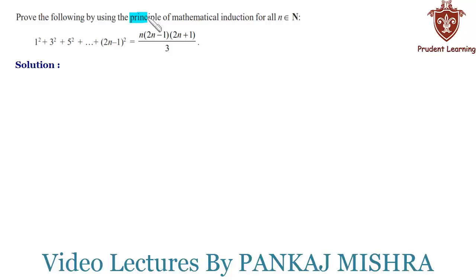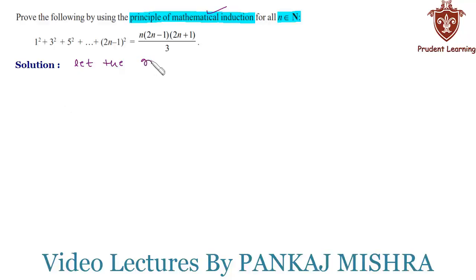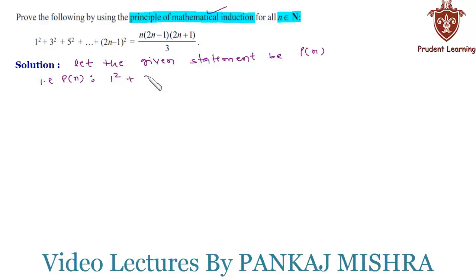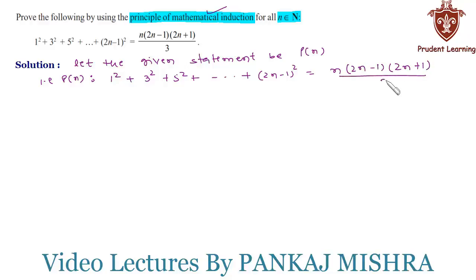Prove the following by using the principle of mathematical induction for all n belonging to the natural numbers. In this question we have an equation which we need to prove by using the principle of mathematical induction. Let the given statement be P(n), such that 1² + 3² + 5² and so on up to (2n-1)² equals n times (2n-1) times (2n+1) upon 3.